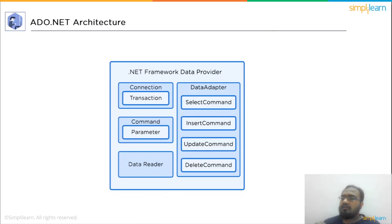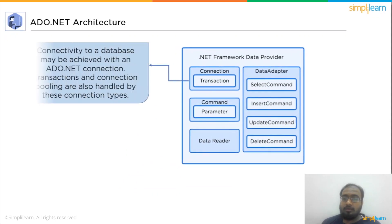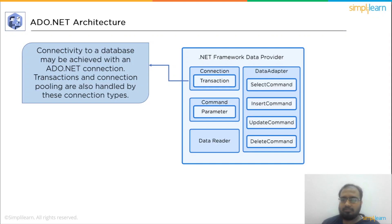The four classes are: connection class, command class, data reader class, and data adapter class. The connection class is used to access the database — transaction and connection pooling are managed by these connection types. A connection object connects a data source to a data adapter via the command class, and when making a connection you need to provide a data provider and a data source.